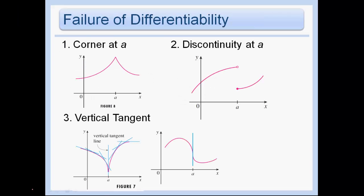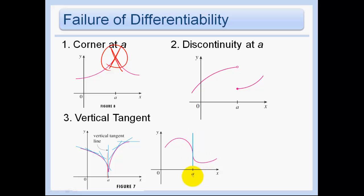Some examples of failure of differentiability: if we have a corner — look at this — if we took the tangent line here and then we took the tangent line there, it gives us a big old x; not differentiable. Here, this isn't even continuous, so it's obviously not differentiable. And here we have an undefined slope at some point, so when the slope is undefined we wouldn't be able to draw the derivative on the f prime graph.